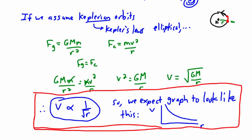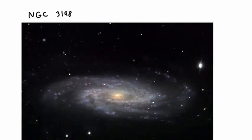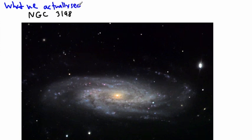Now what do we actually see? This is what I'm going to show you here. I'm trying to build up a bit of suspense because of course something very strange happens. Let's say we look at this particular galaxy. This is NGC 3198.